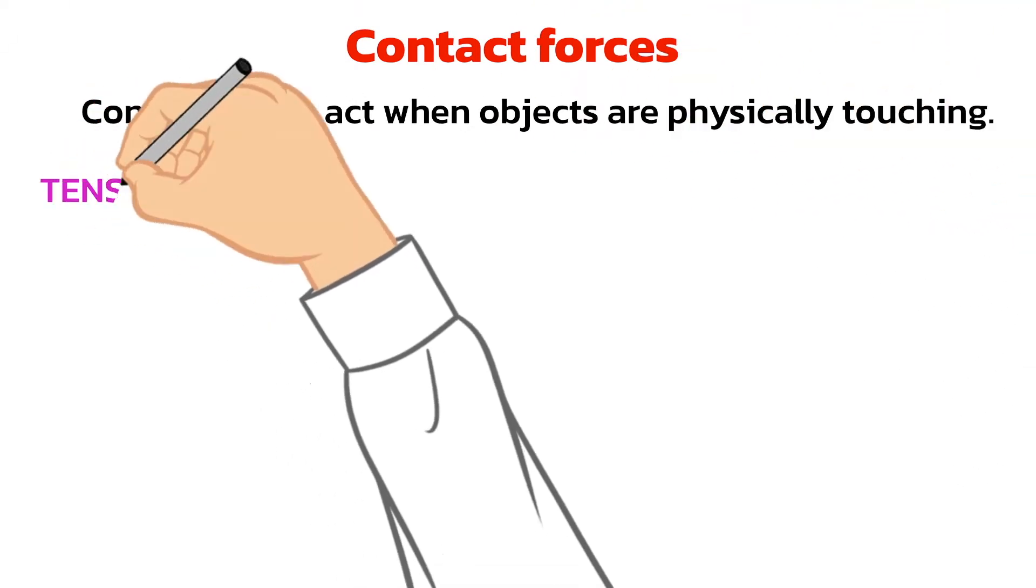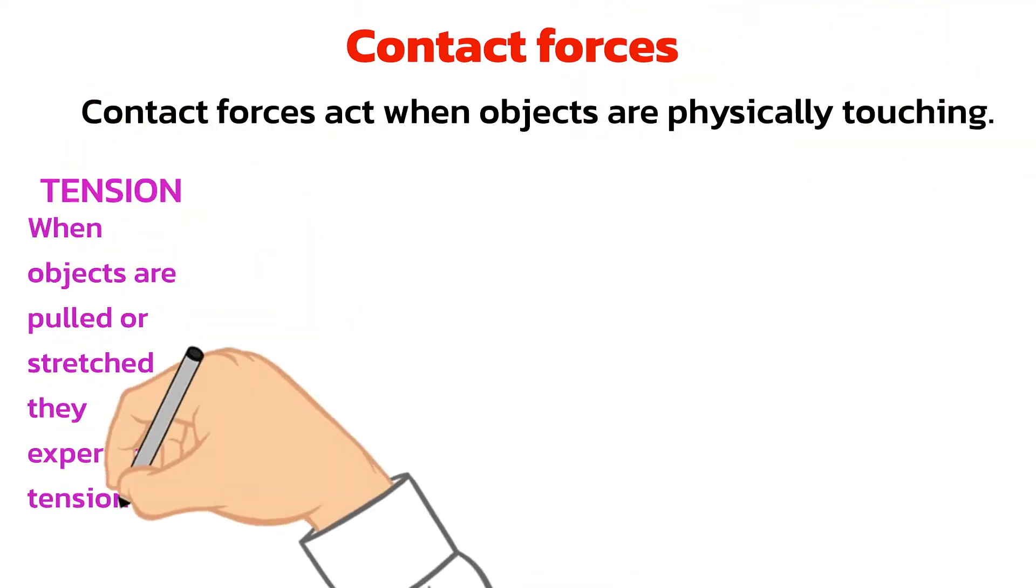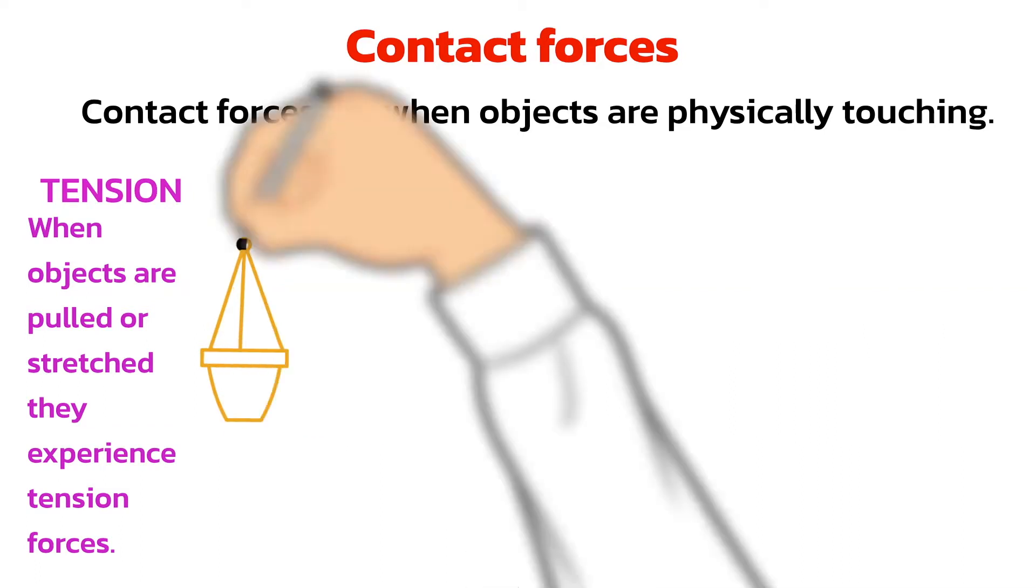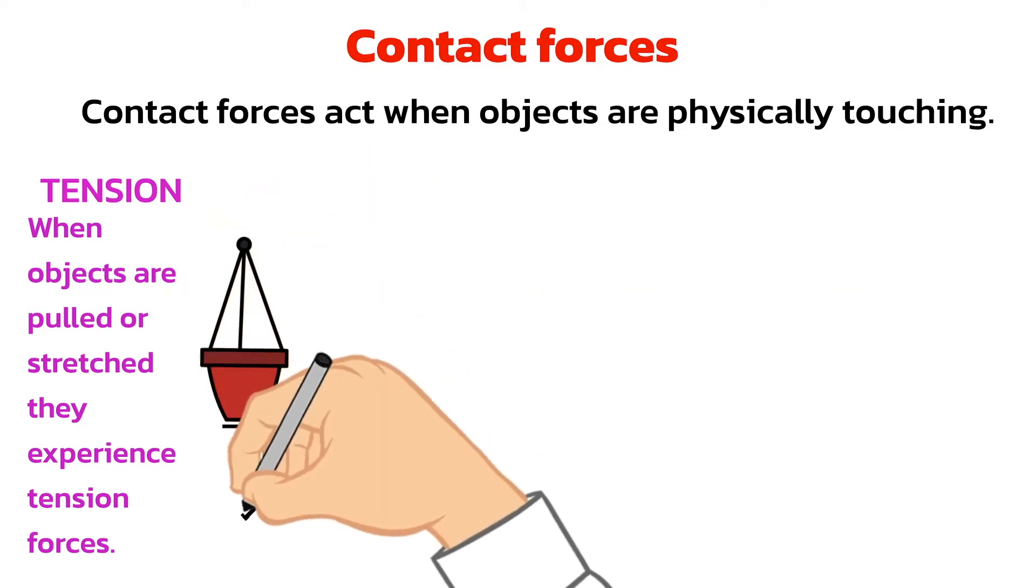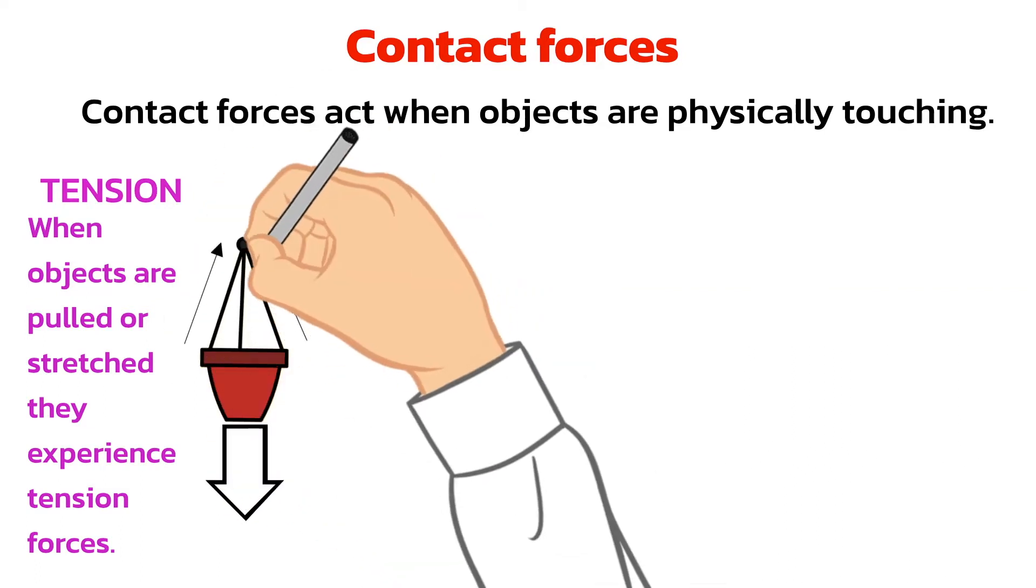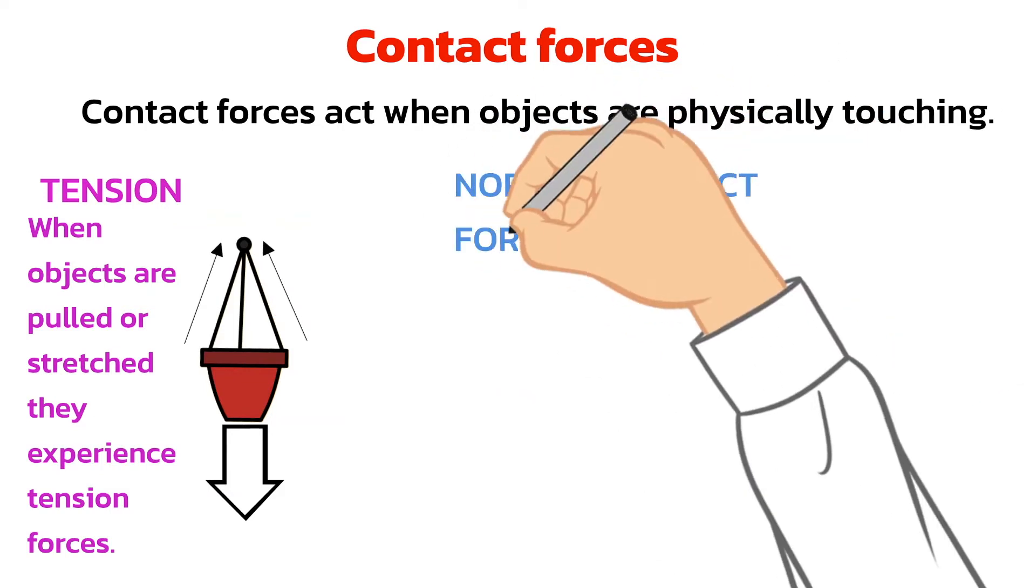The next contact force you need to know about is tension. Objects experience tension forces when they are pulled or stretched. In this diagram, the weight of the plant pot acts downwards and the hook provides an upward force. This causes the string to feel a force of tension.